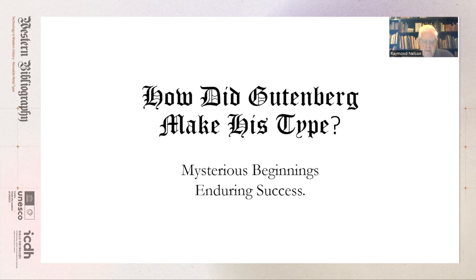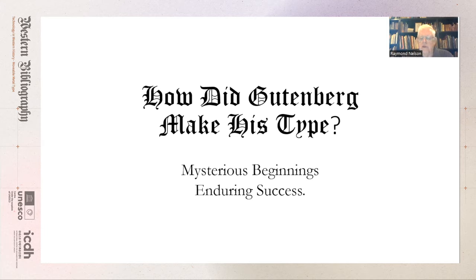How did Gutenberg make his type? Cast metal printing types were the most basic and essential components in a practical system for printing texts. Efficient printing demanded a quick and effective printing press and a supply of paper, but most importantly, Gutenberg required precision cast movable types that combined into straight lines and flat pages. The invention of a practical type mold was the unique and new element that made the manufacture of these accurate and economic letters possible. It lies at the heart of Gutenberg's success.